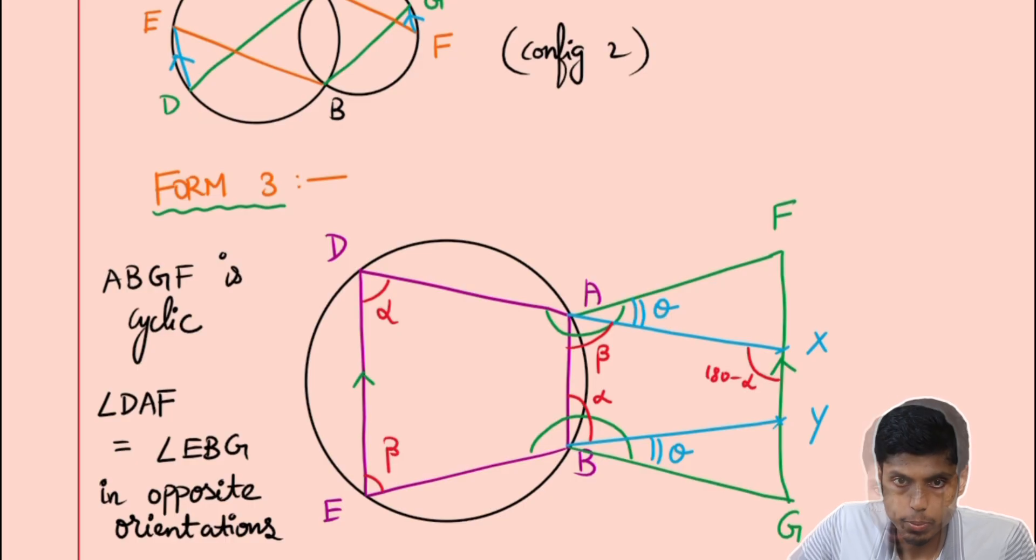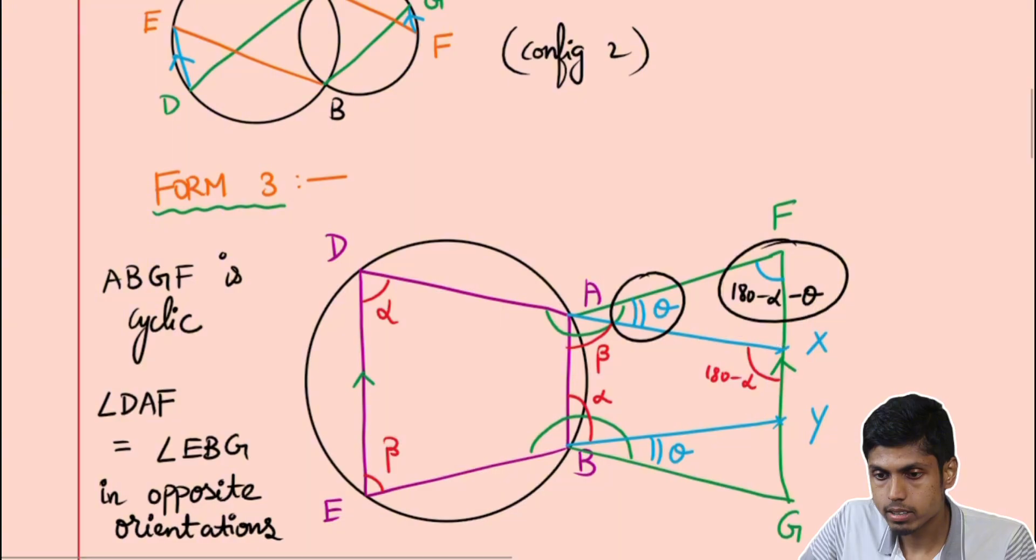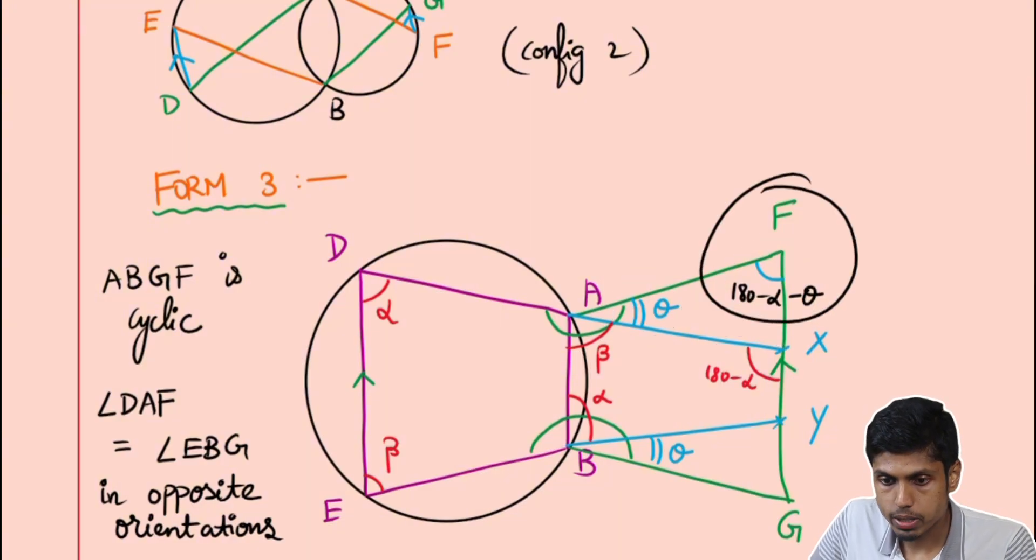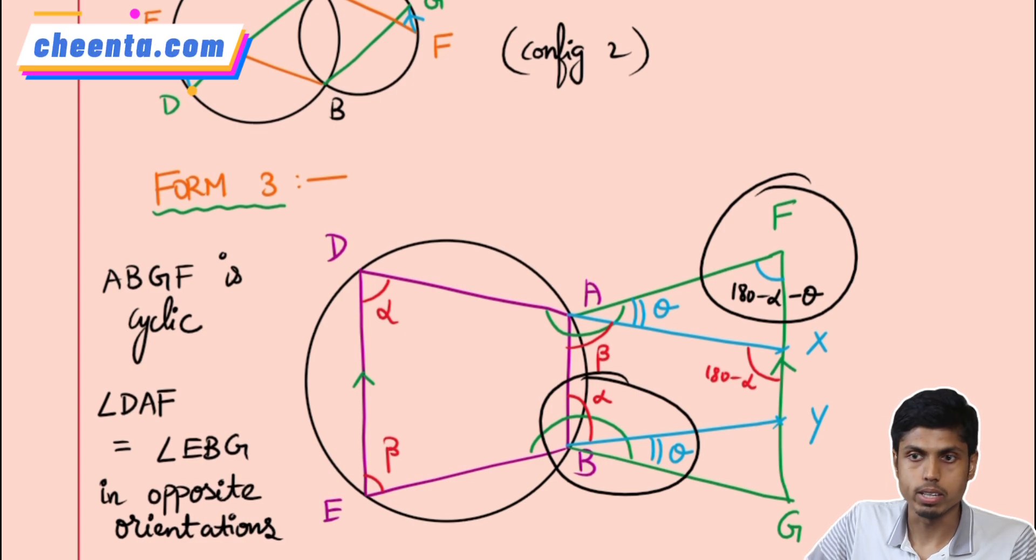And therefore, if I find this angle, the angle at F will be 180 minus alpha minus theta, because the sum of this one and theta should form the angle 180 minus alpha by exterior angle property of a triangle. And hence, the angle at F plus angle at B, which is alpha plus theta, adds up to 180, making it a cyclic quadrilateral.